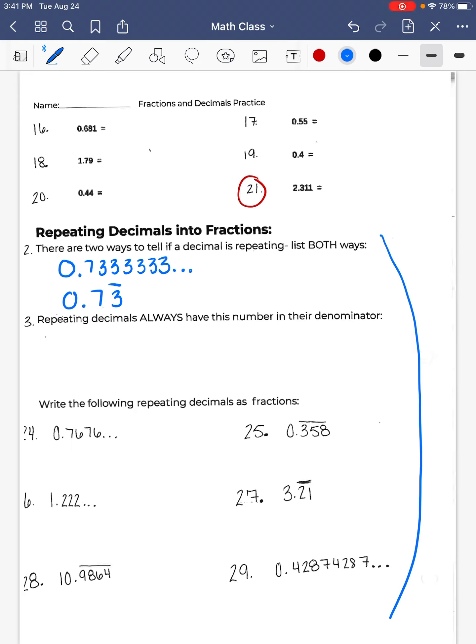Repeating decimals always have this number in their denominator. So repeating decimals in fraction form in the denominator always have some sort of 9 in the bottom. So there's a cool way to remember this. If there's only one digit that's repeating, then there's one 9 on the bottom. For example, if there's just 3's that are repeating, then it would be 3 over 9. If there are 2 digits, like, let's say, 0.232323 dot, dot, dot, then this would be 23 over 99. And if there's 3 digits, then it would be 999 on the bottom.